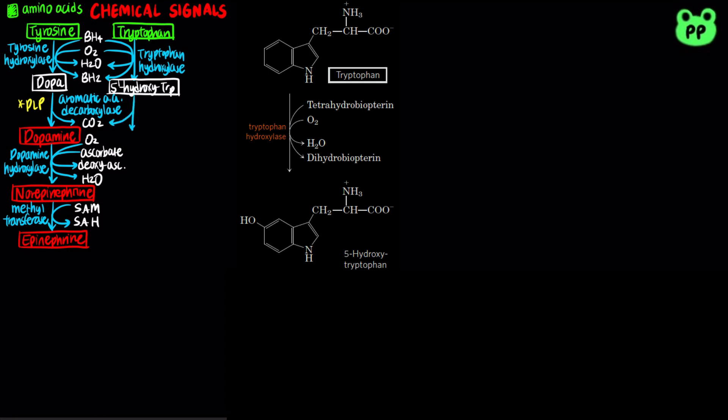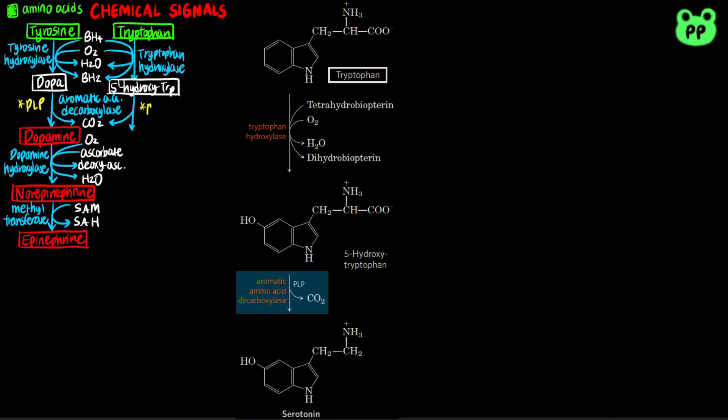5-hydroxytryptophan can then undergo decarboxylation by PLP-dependent aromatic amino acid decarboxylase to form serotonin, which is a key neurotransmitter that plays a major role in modulating mood.